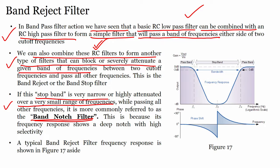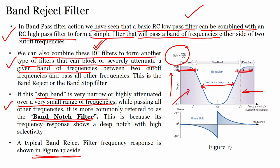A typical band reject filter frequency response is shown in figure 17. We consider minus 3 dB points — this is the pass band and this is the stop band. The phase plot for the band notch filter shows a phase shift spreading from FC, going through the characteristic shape.